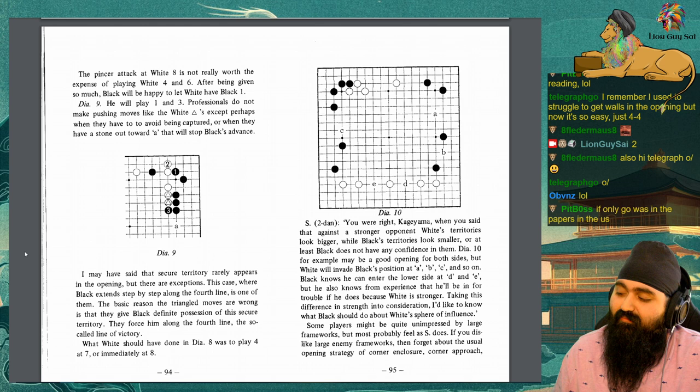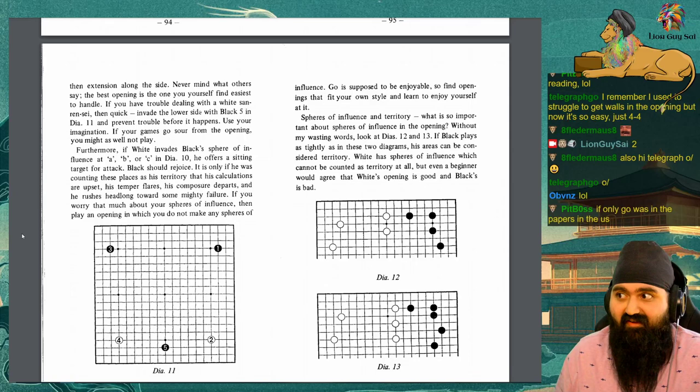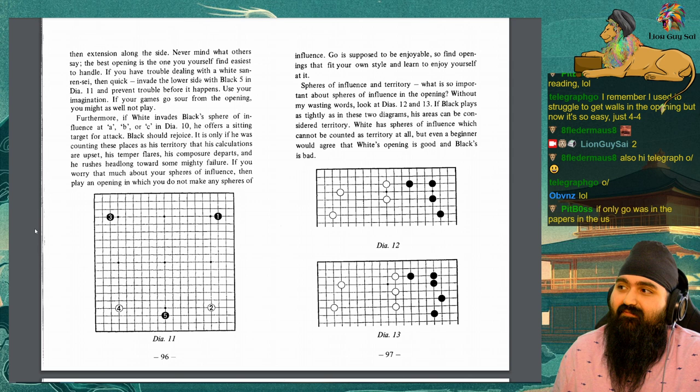Some players might be quite unimpressed by large frameworks, but most probably feel as S does. If you dislike large enemy frameworks, then forget about the usual opening strategy of corner, enclosure, corner, approach, and then extension along the side.